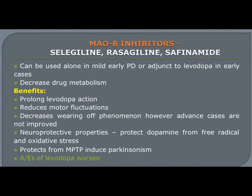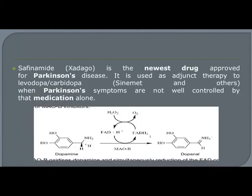Monoamine oxidase B (MAO-B) inhibitors — selegiline, rasagiline, and safinamide — inhibit the metabolism of dopamine and are used in combination with L-Dopa. These drugs reduce motor fluctuations like bradykinesia, dyskinesia, and wearing-off effect. They are also useful to treat Parkinsonism associated with toxins such as MPTP. Safinamide is a newer drug helpful to treat symptoms such as bradykinesia and dyskinesia.